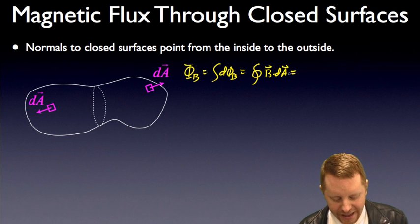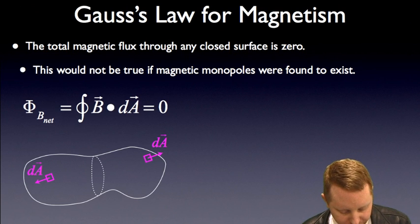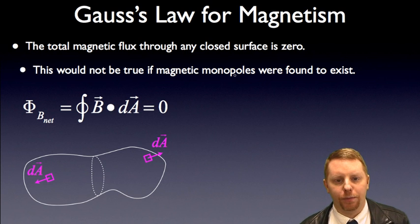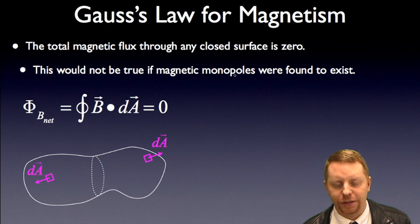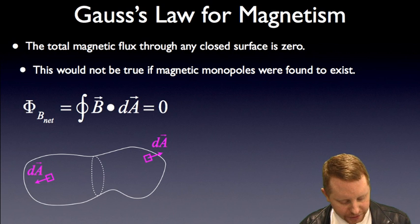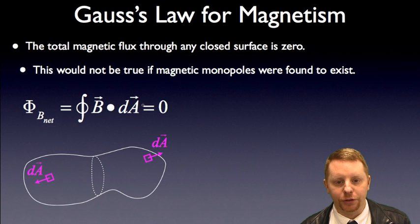And in this case, the answer to this is always going to be equal to zero. That's Gauss's law for magnetism. What it says is the total magnetic flux through any closed surface is zero. That wouldn't be true if magnetic monopoles existed, if you could have a north all by itself or a south all by itself. But because all magnetic fields, they all come a north with a south, the total net magnetic flux through any closed surface is always going to be equal to zero.